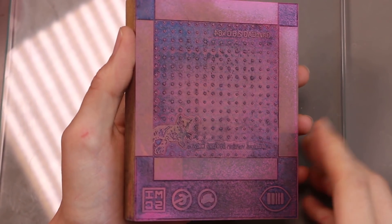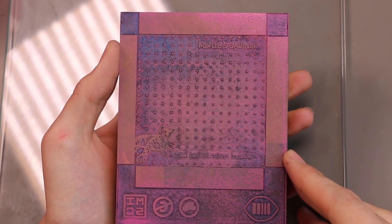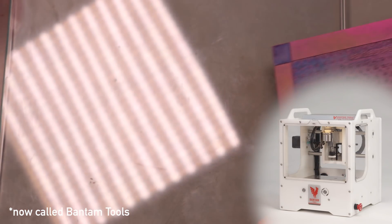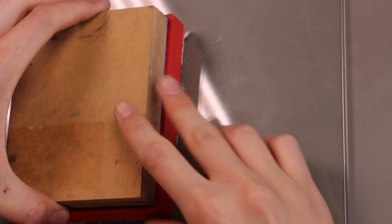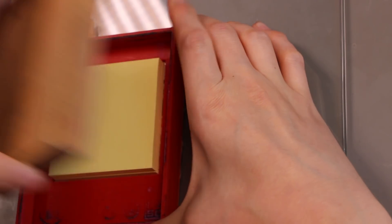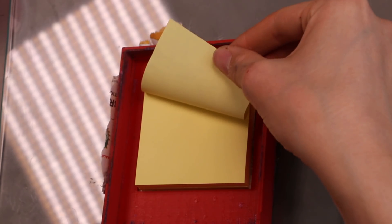This is a linoleum block that I engraved in Other Mill. I made a little 3D printed jig such that you ink the block and then you press the block down there and then you tear off a page.